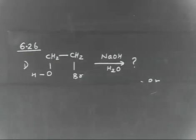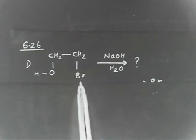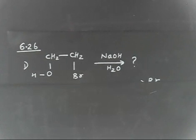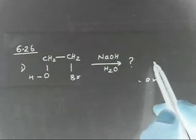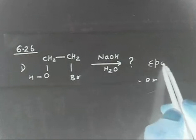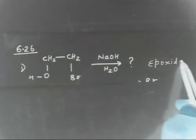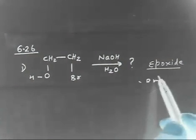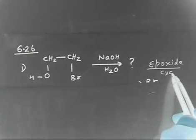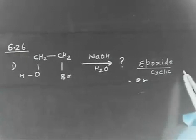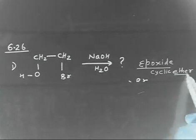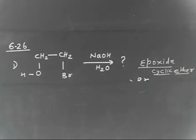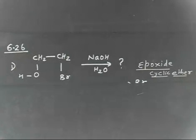Let us try to solve this problem — quite an easy problem. You have CH2OH and CH2Br. If treated with NaOH, what will be the product? The hint is that the final product is an epoxide. Do you remember what an epoxide is? Cyclic ethers are called epoxides. So the final product is a cyclic ether — derive the product using this idea.